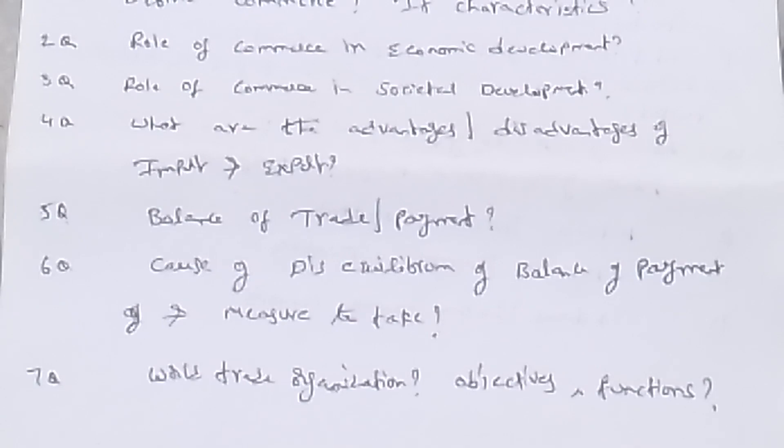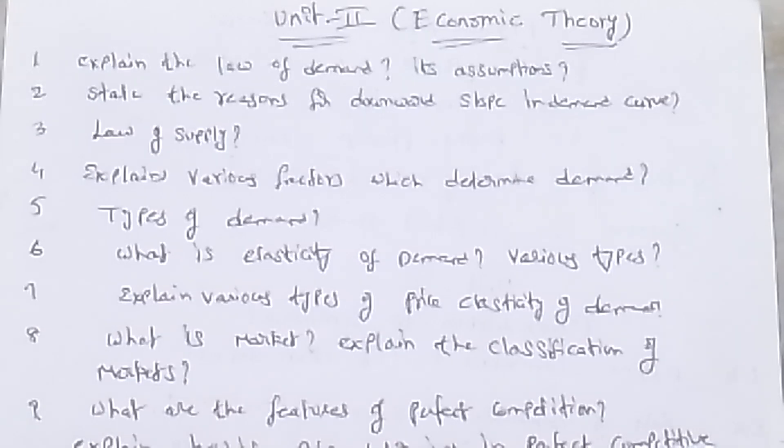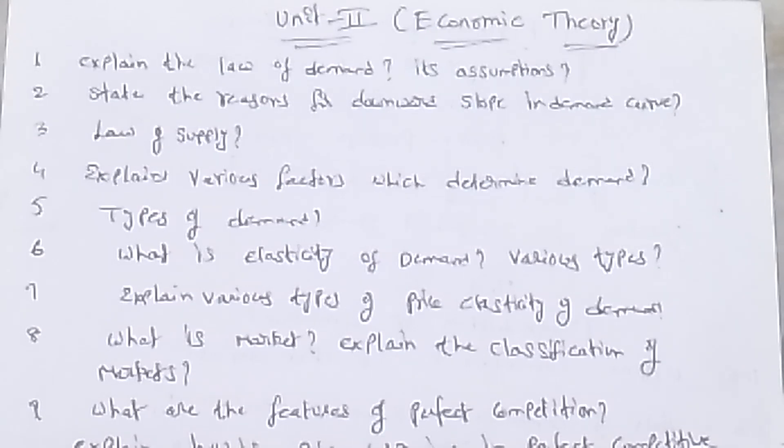Let us see unit two. In unit two, economics theory. It means we have intermediate junior inter syllabus. Three topics are taken in BCom. What are these topics? Demand and supply.